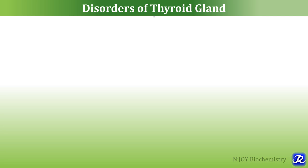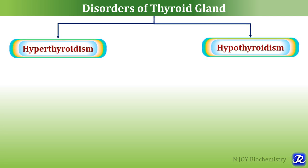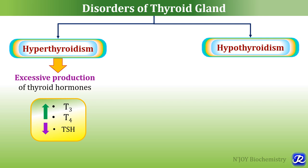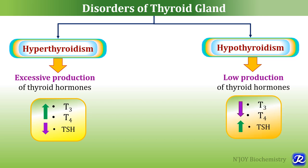Disorders of thyroid gland are hyperthyroidism and hypothyroidism. In hyperthyroidism, there is increased synthesis and secretion of thyroid hormones by the thyroid gland, characterized by increased serum levels of both T3 and T4 and decreased TSH. In hypothyroidism, there is low production of thyroid hormones, with low T3 and T4 and increased TSH level in serum.